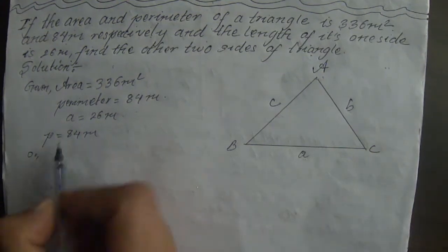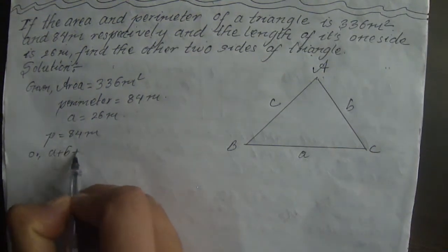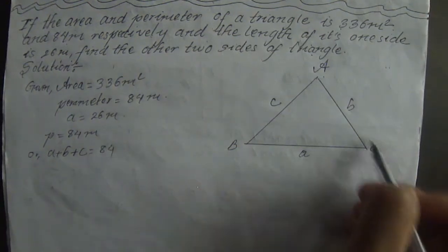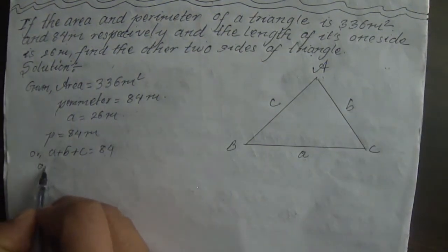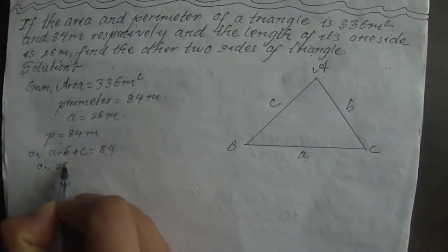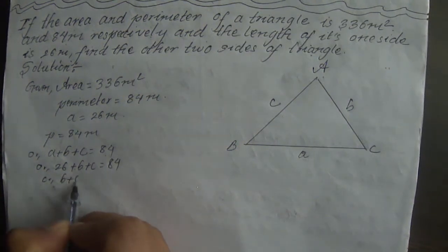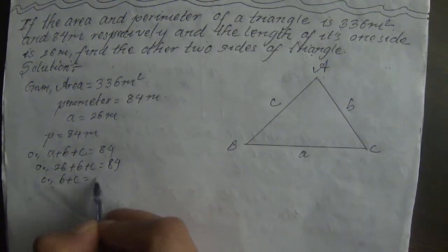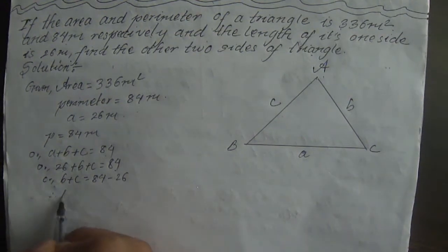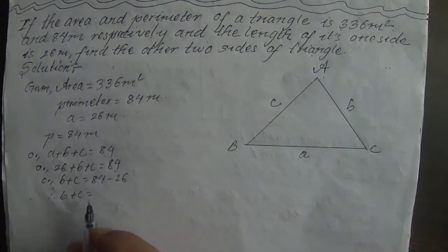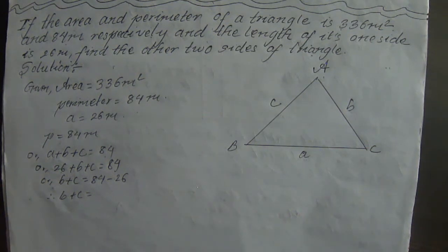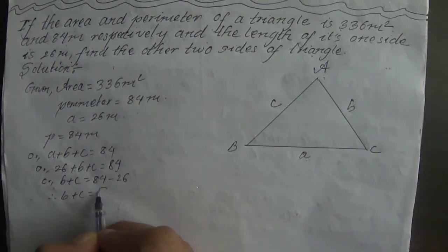The perimeter is the sum of all sides: A plus B plus C is equal to 84. Since A is 26, we get B plus C is equal to 84 minus 26, therefore B plus C is equal to 58.